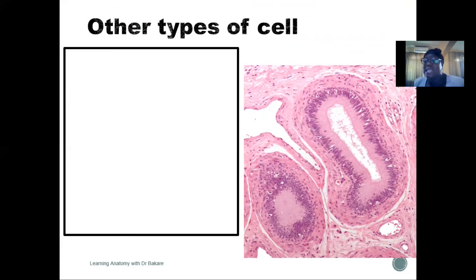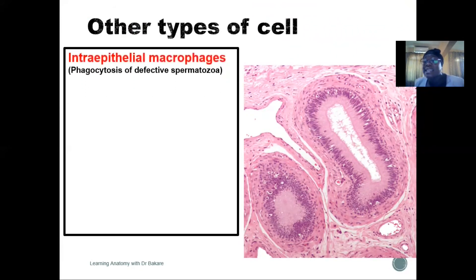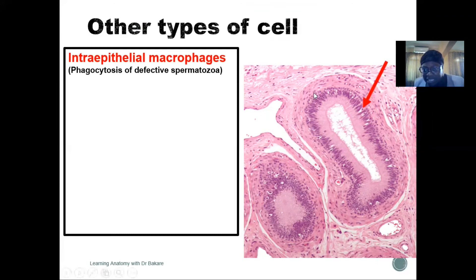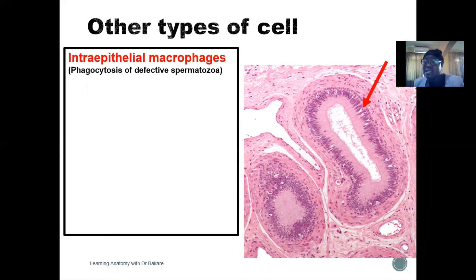The other type of cell seen within the epithelium are the intraepithelial macrophages. These are embedded within the epithelium of the epididymis. What they do is phagocytosis of defective spermatozoa — when they detect spermatozoa that are not fit to move through the ductal system, these cells engulf and digest them.